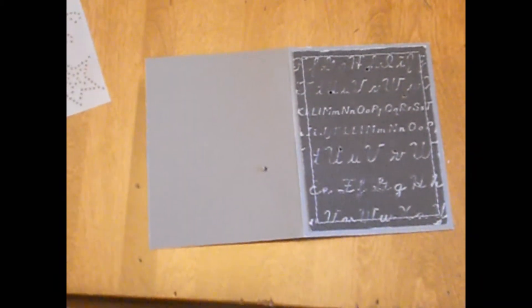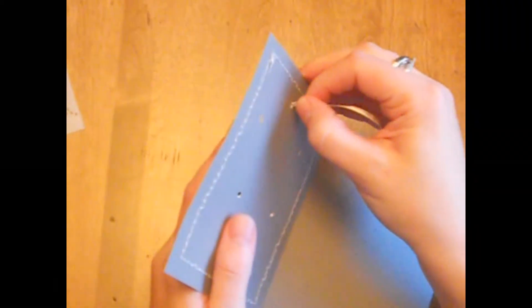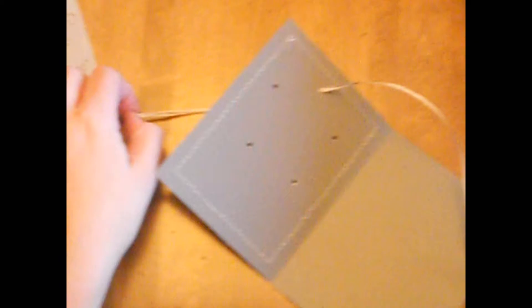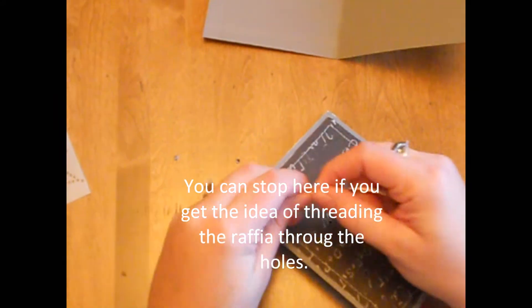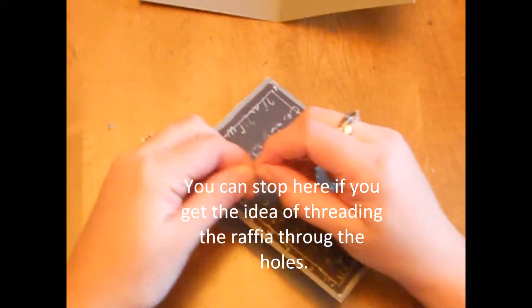So using the raffia, I'm going to start from the back because I want to make sure when I'm done that I can tie it on the back of the card. So I'm just going to take it and you might need to play with the end a little bit to get it to a point.